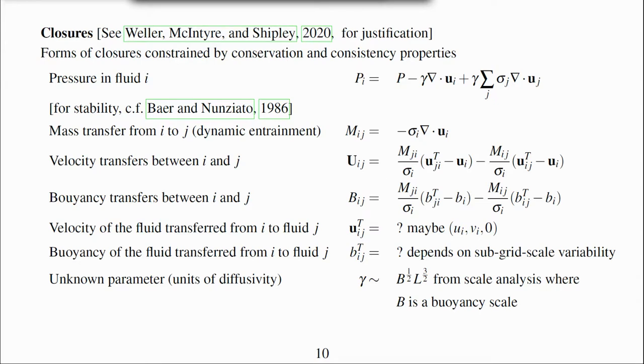We propose that the horizontal velocity of fluid transferred will be equal to the velocity of the giving fluid. So u_ij transferred for u and v is equal to uᵢ and vᵢ. However, since conditional filtering is based on w, the fluid transferred will have w equals zero by definition. So w_ij transferred is zero.